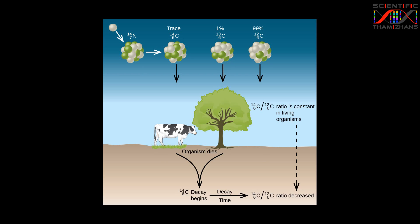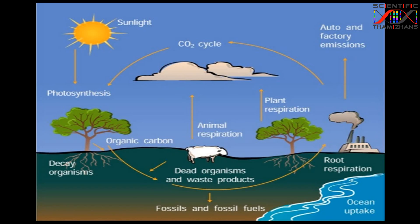This radioactive carbon-14 combines with oxygen to form carbon dioxide. Carbon-14 enters the carbon dioxide cycle through the atmosphere. But, in a single step, we are also looking at metabolism.